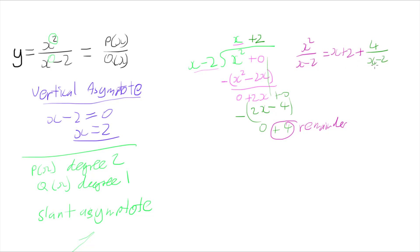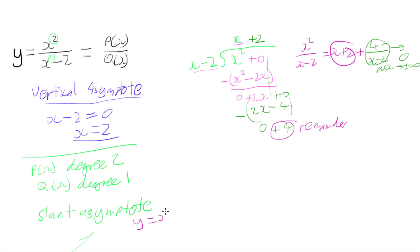As x approaches a really, really big number, this remainder term 4 over x minus 2 is going to approach 0 as x approaches positive or negative infinity, because we're dividing by a really big number. So I don't worry about that term. Therefore, my slant asymptote is y equals x plus 2. So that gives me my slant asymptote, and I've already got my vertical asymptote.